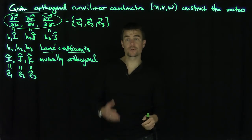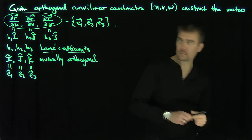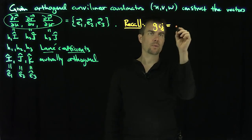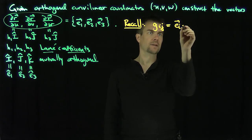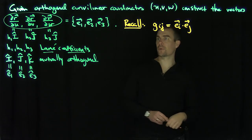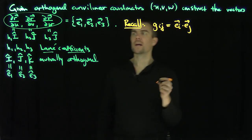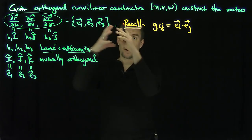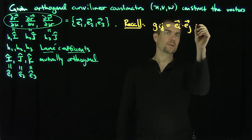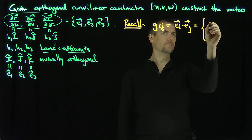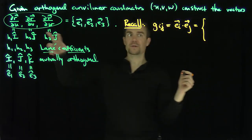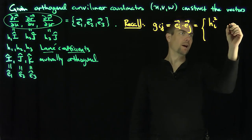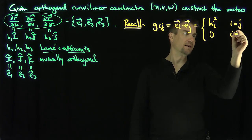Now we know what the metric tensor is going to be. Recall that our metric tensor gij is equal to ei dot ej, where we have a covariant basis. For orthogonal curvilinear coordinates we get a 3×3 matrix with i and j going from 1 to 3. Since these basis vectors are mutually perpendicular, gij reduces to a diagonal matrix: it equals hi squared when i equals j, and zero when i is not equal to j.